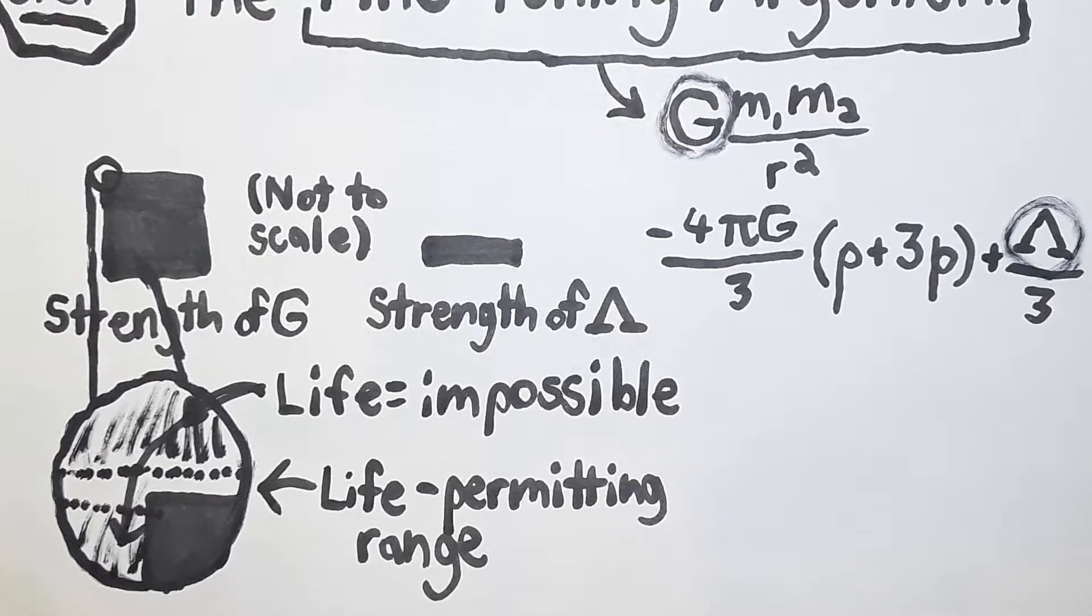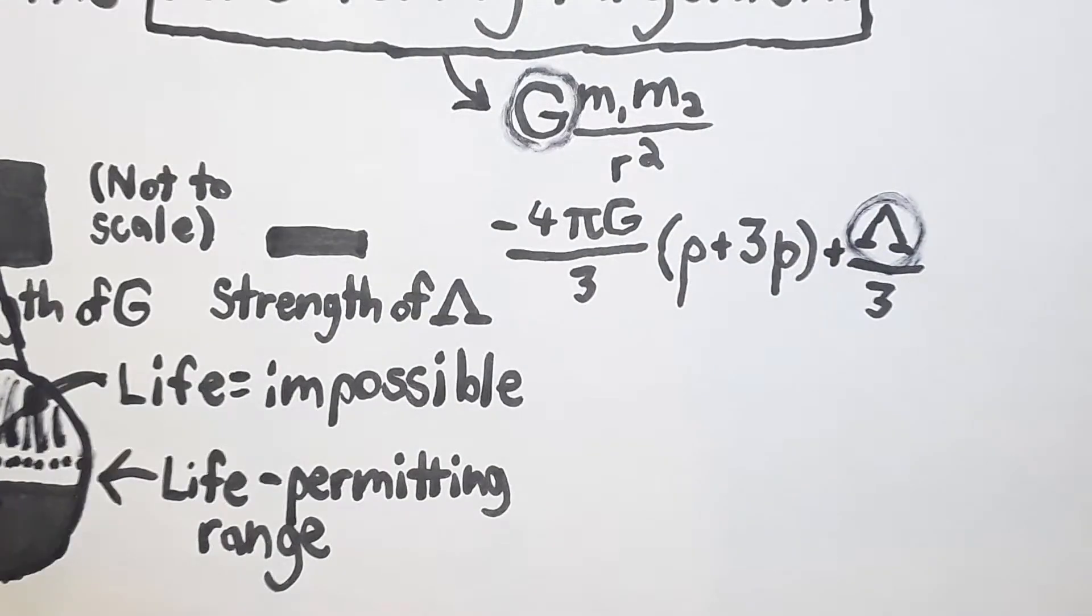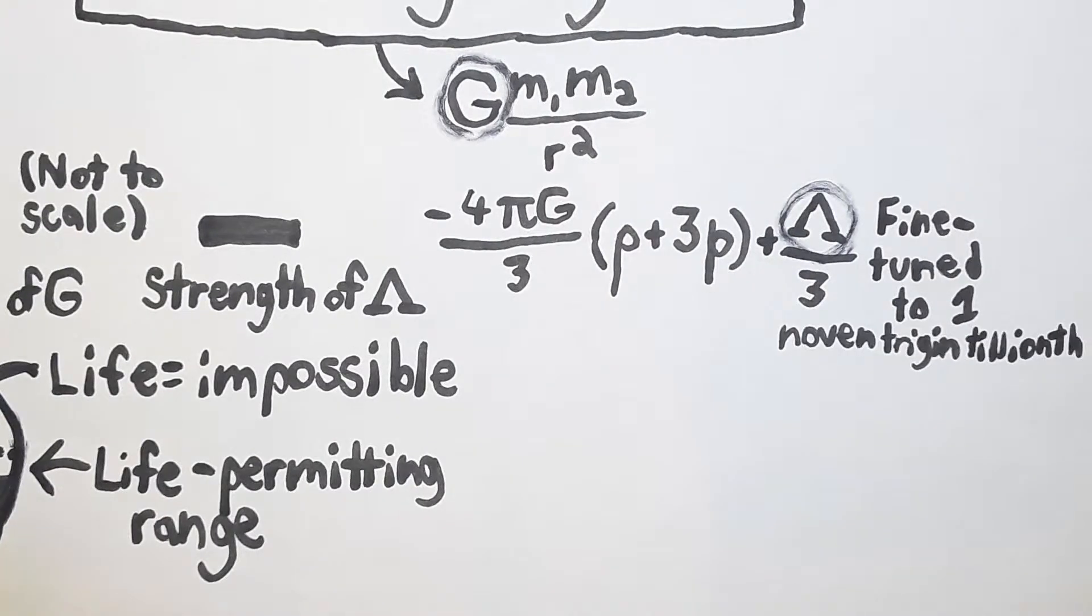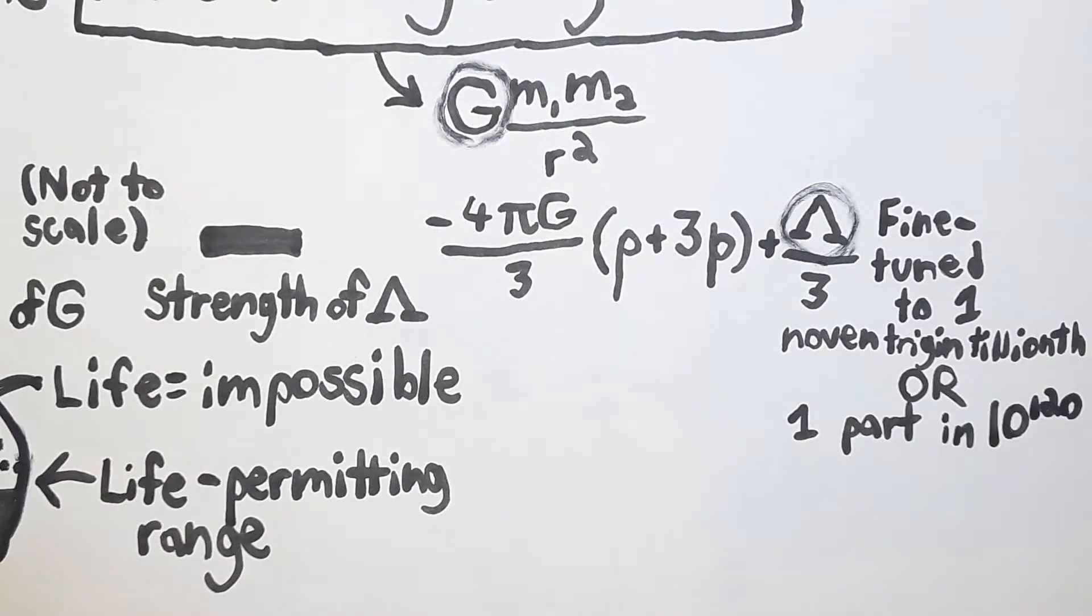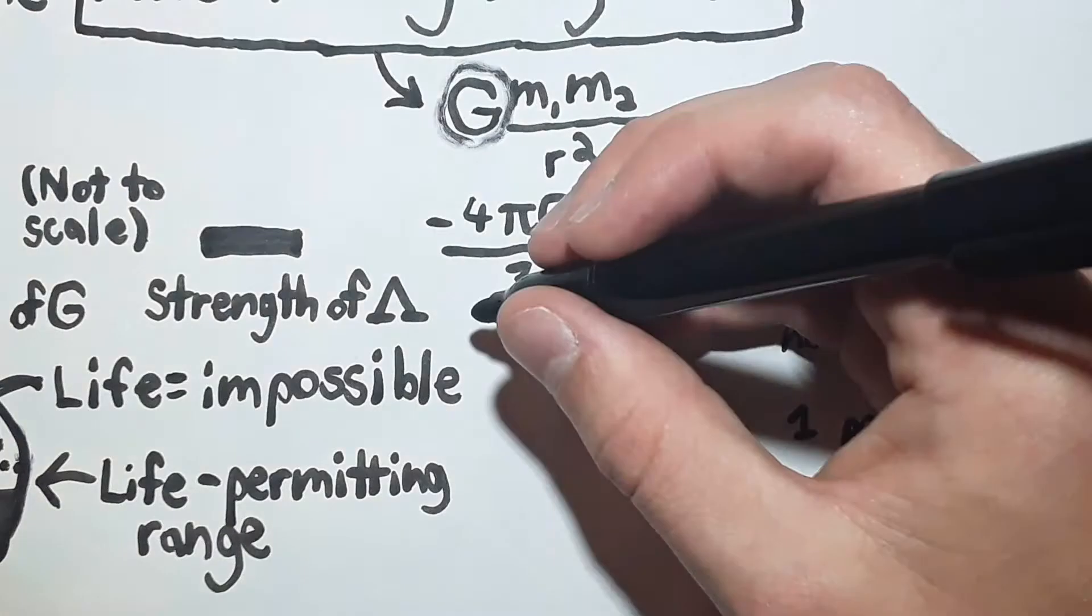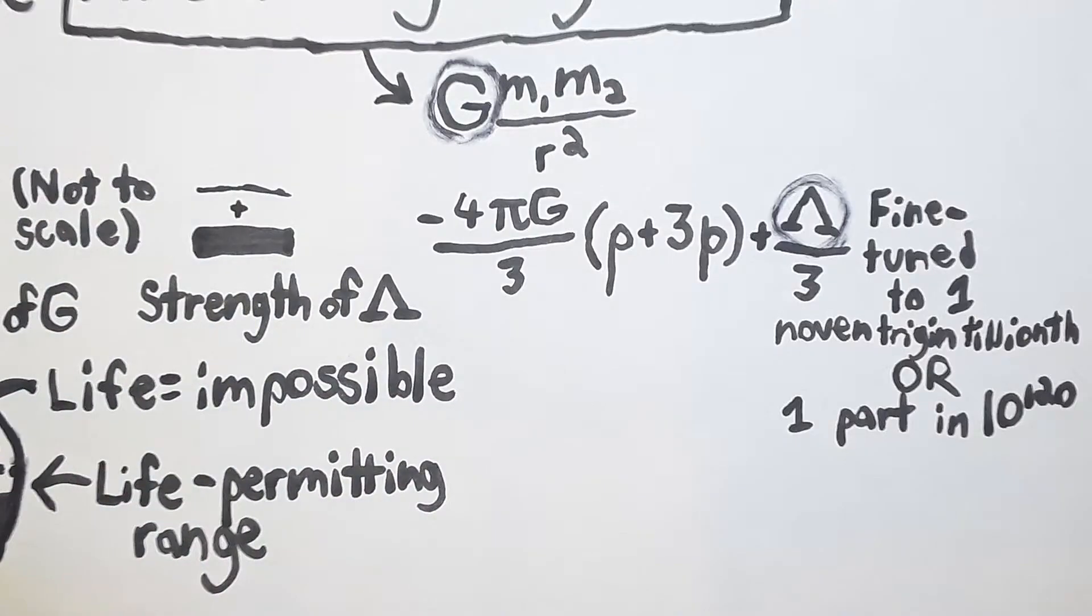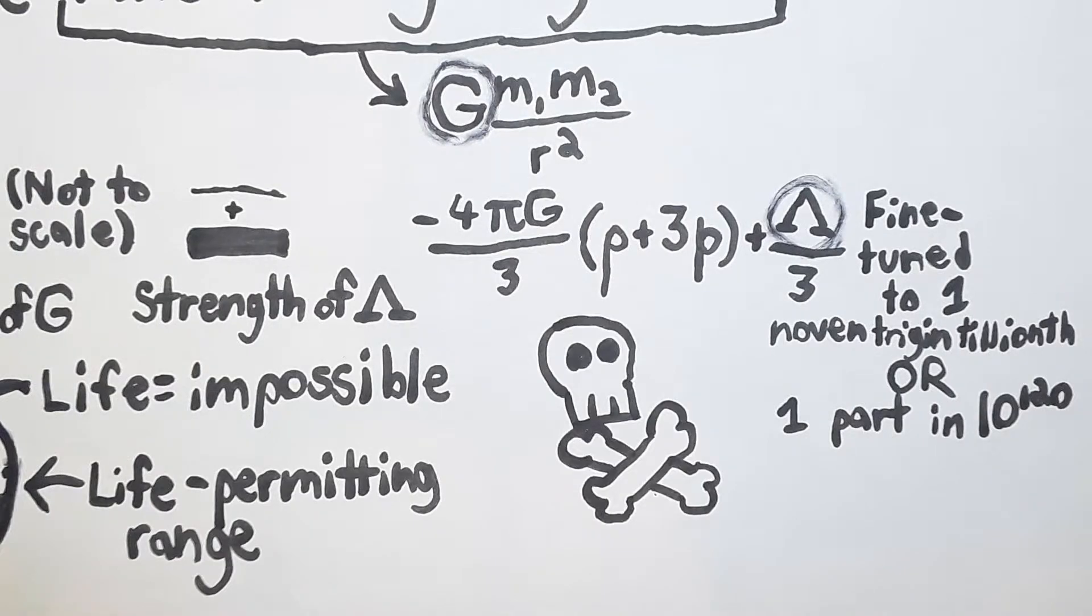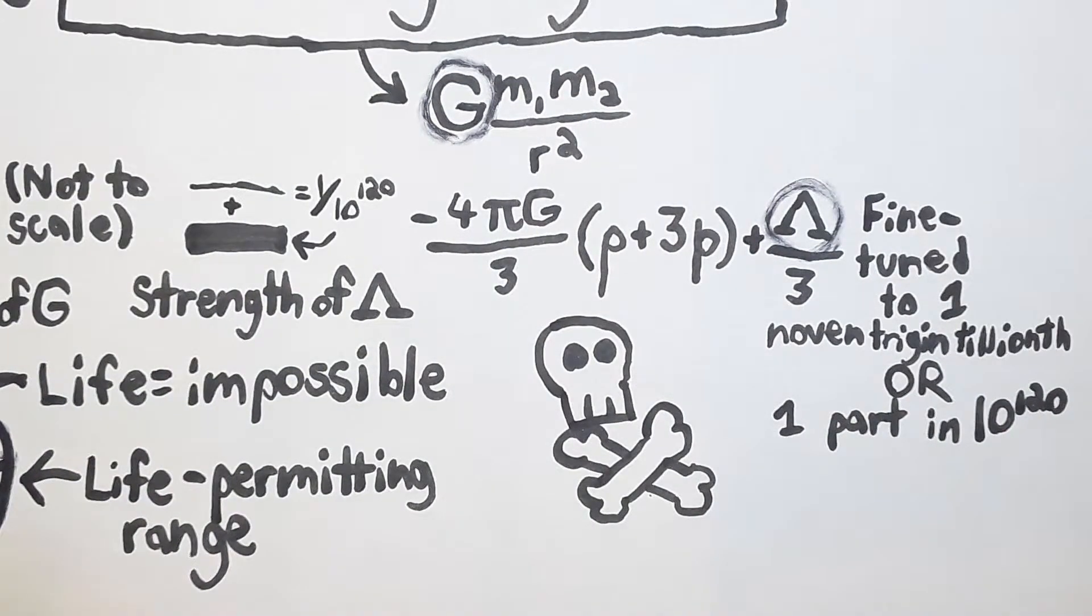For example, the cosmological constant represented by the Greek letter lambda is fine-tuned to one nova trigintillionth or one part in 10 to the 120, a one followed by 120 zeros. In other words, if the constant were a bit stronger no life would have ever existed, even if that extra bit was a nova trigintillionth of the current strength that it is right now. Now there are a bunch of super fine-tuned constants like this.